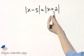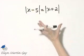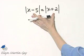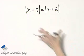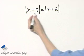Because if they're equal, of course, their absolute values are equal. If they are opposites of each other, their absolute values will still be equal. So that's how we solve this.